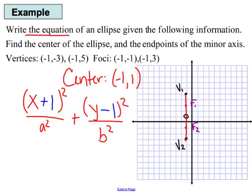Now I'm going to figure out how to find a and b. The a value describes the horizontal axis — the value underneath x squared describes the horizontal axis, and the value under y describes the vertical. Since I'm given the vertical axis from top to bottom, I can find from the center that it's 4 away, so b squared in this case is 4 squared, which is 16.